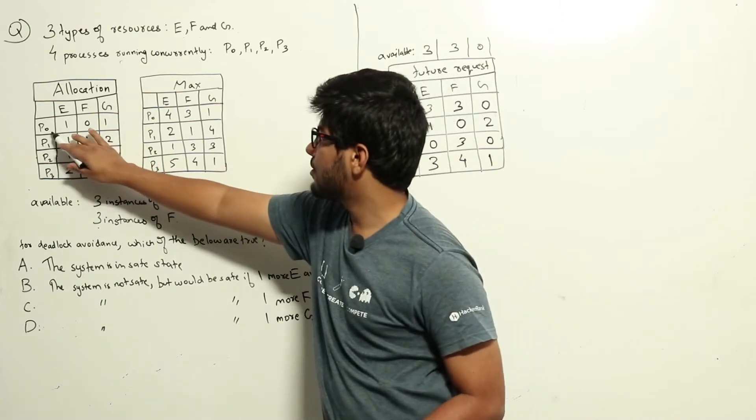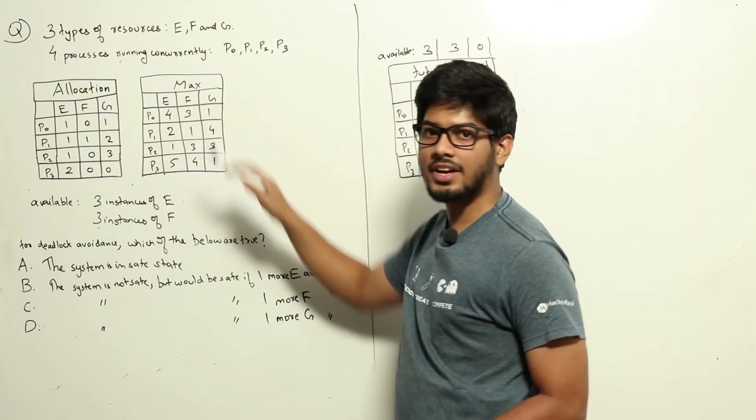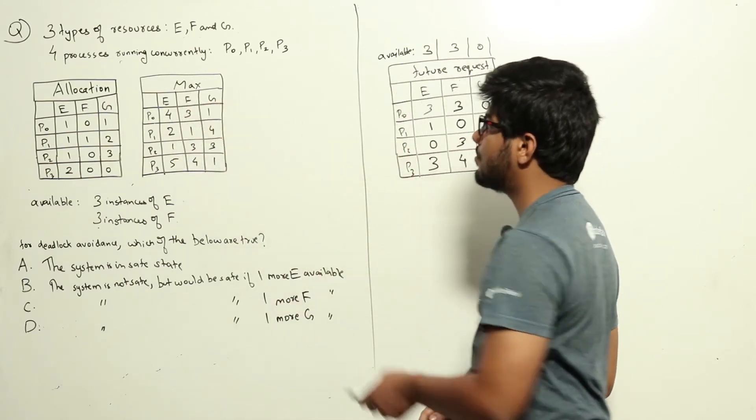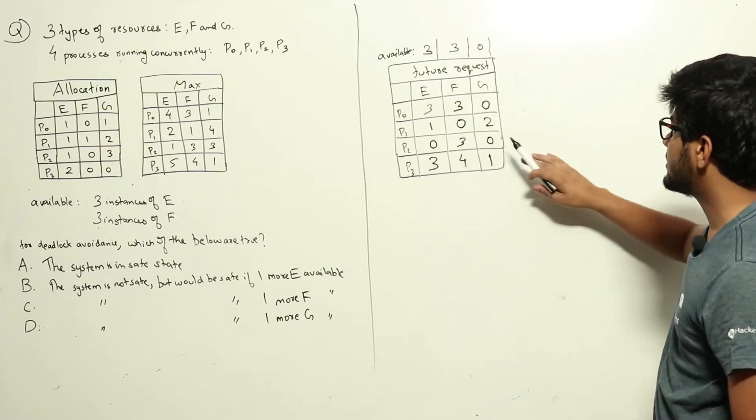Let's take a look at one example. P0 currently has one of type E. P0 can request a maximum of four of type E. It currently has one, meaning in the future it can request up to three resources. In the same way I have filled the entire chart.